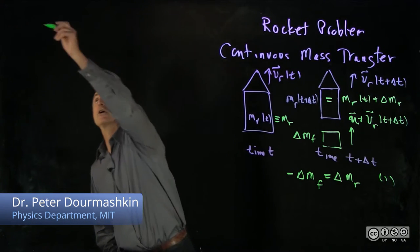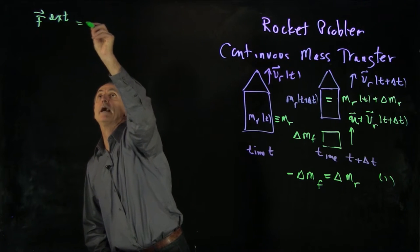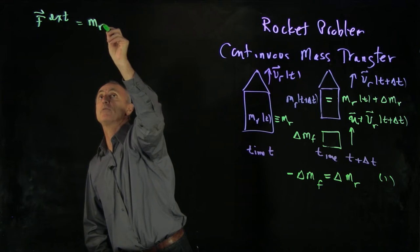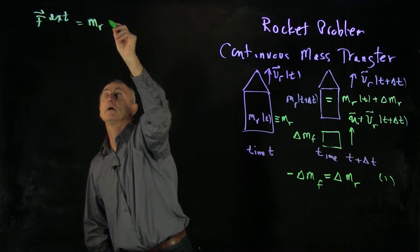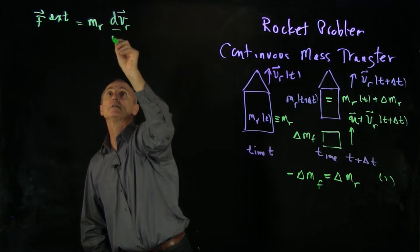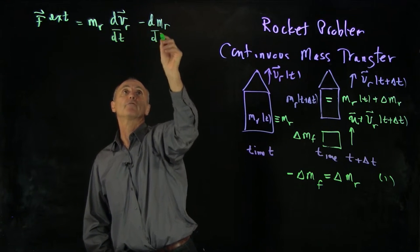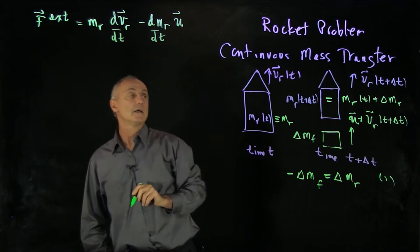For a rocket in external force, we had the rocket equation, which we wrote as mass of the rocket. Now remember, this is a function of time times the derivative of the rocket, dr dt. And we also had this second term that came from the ejecting fuel.